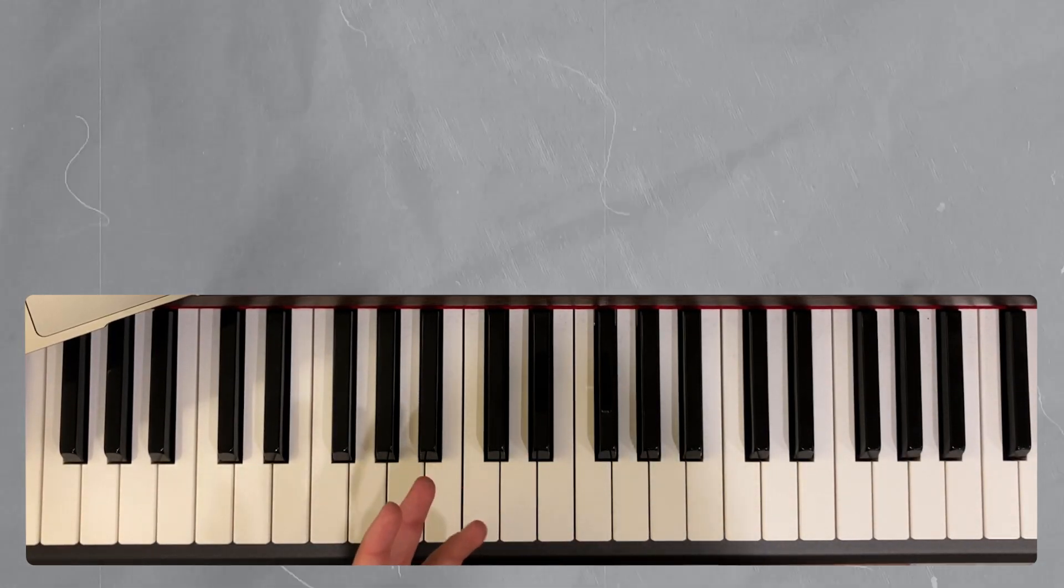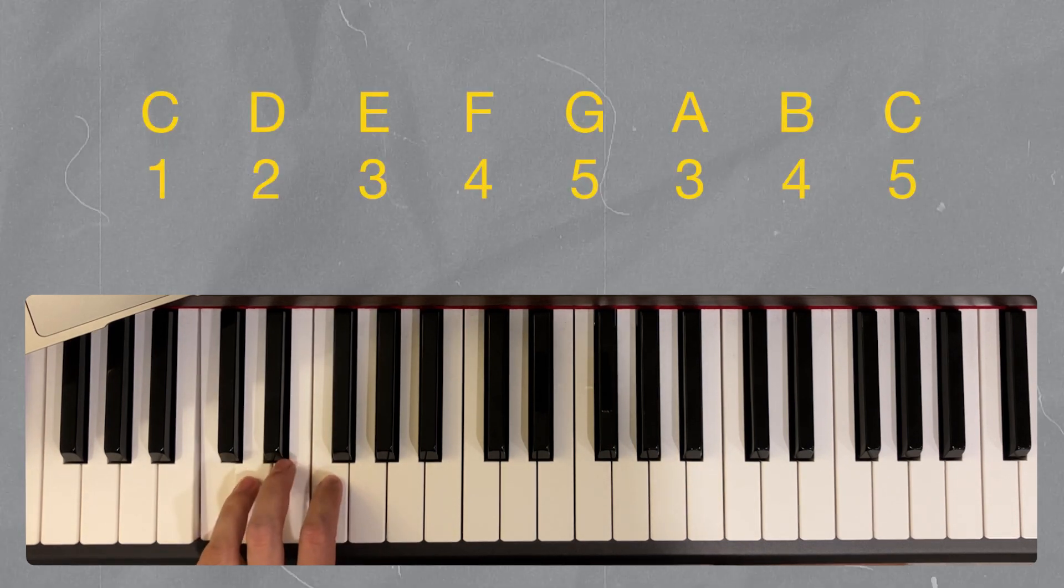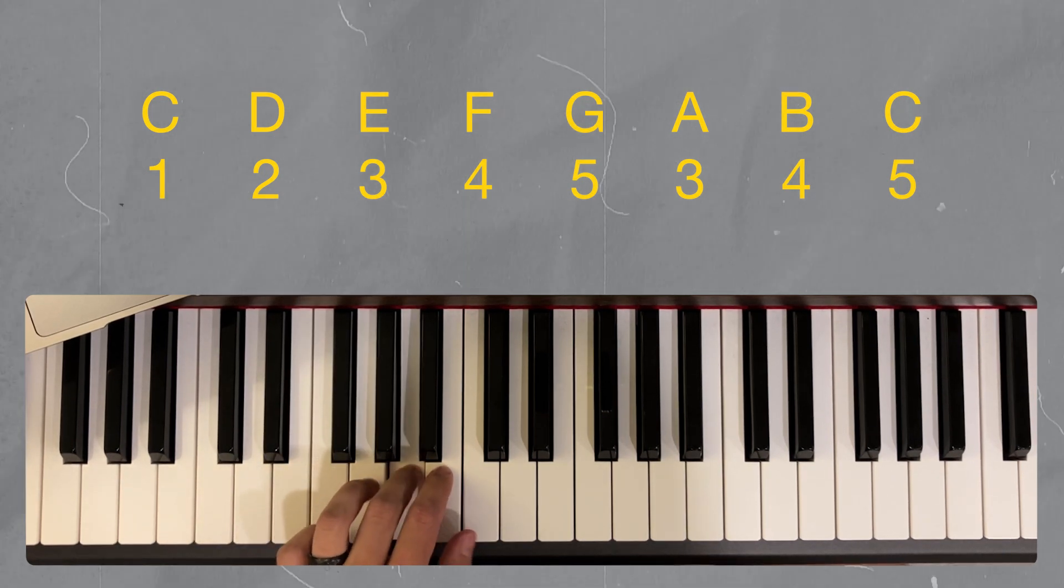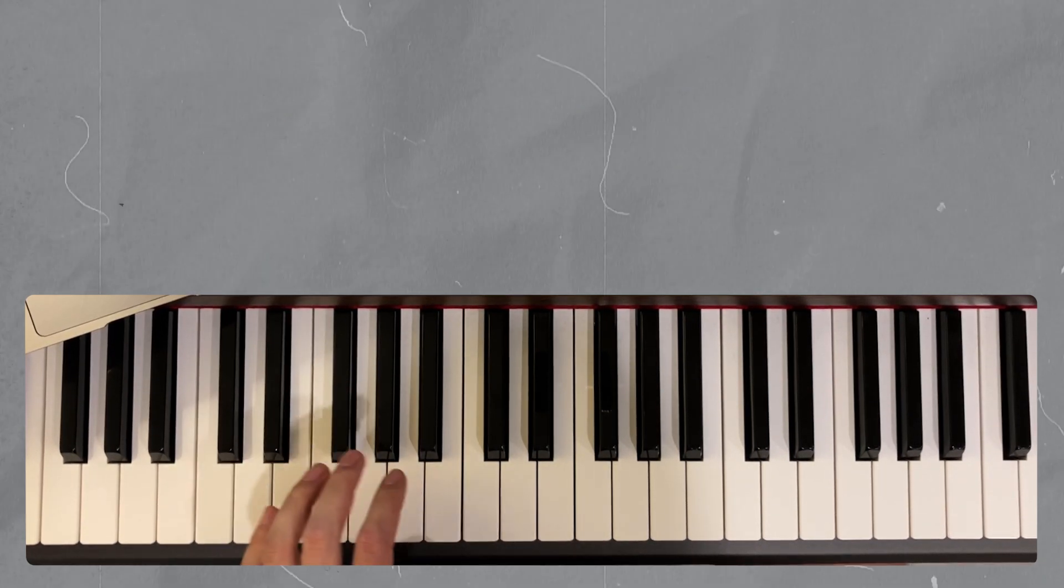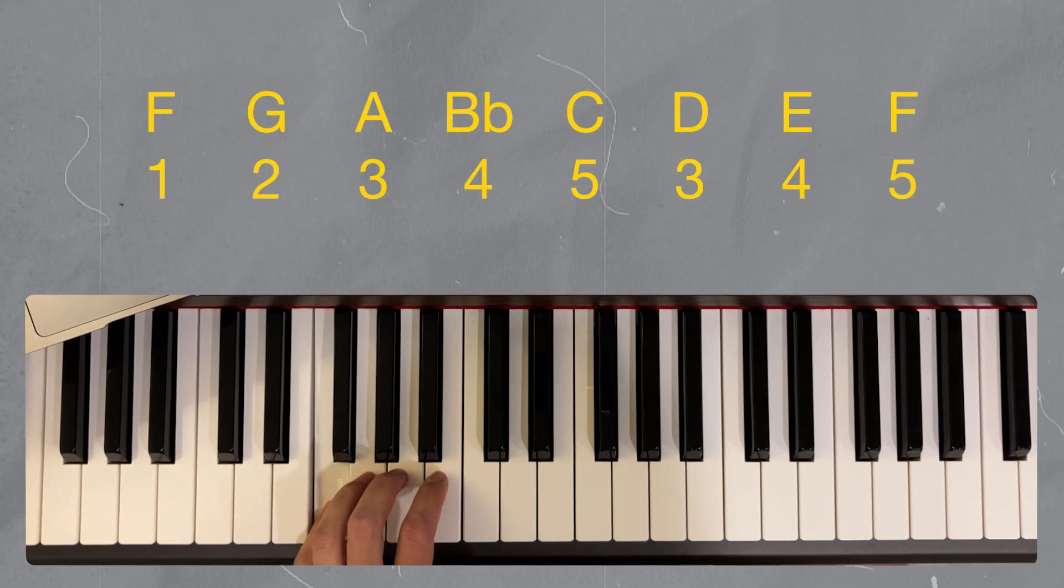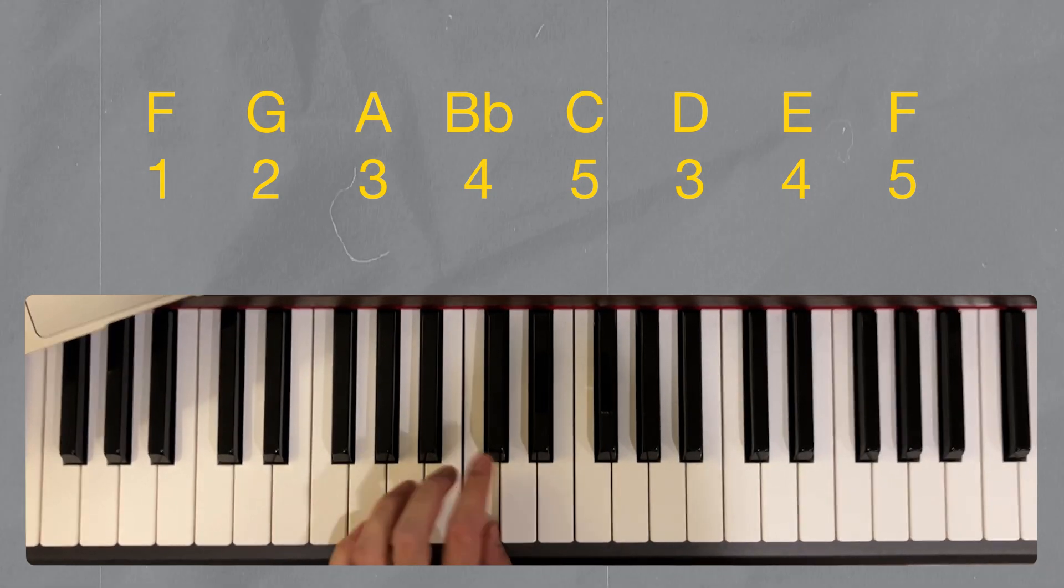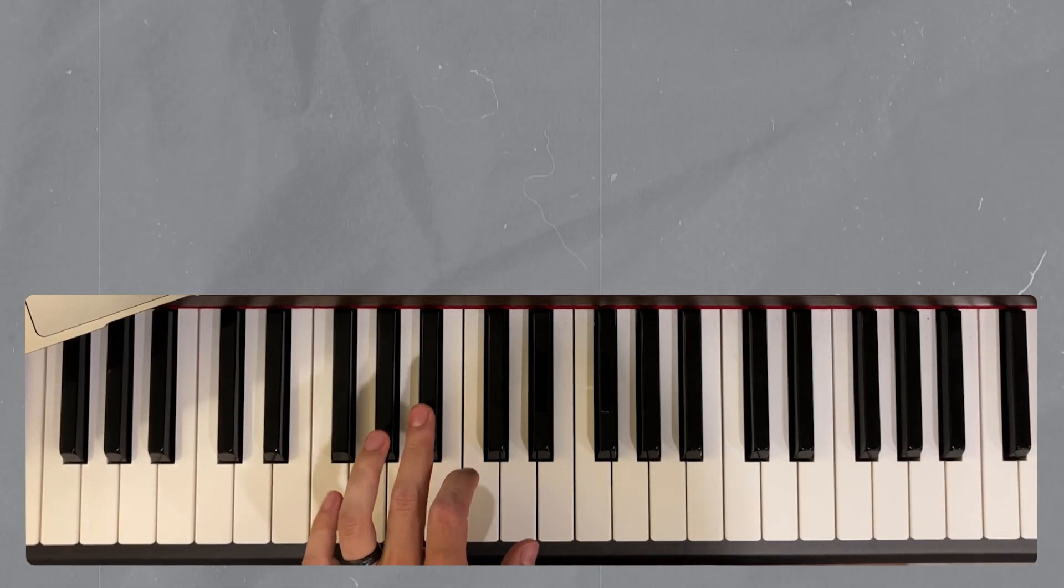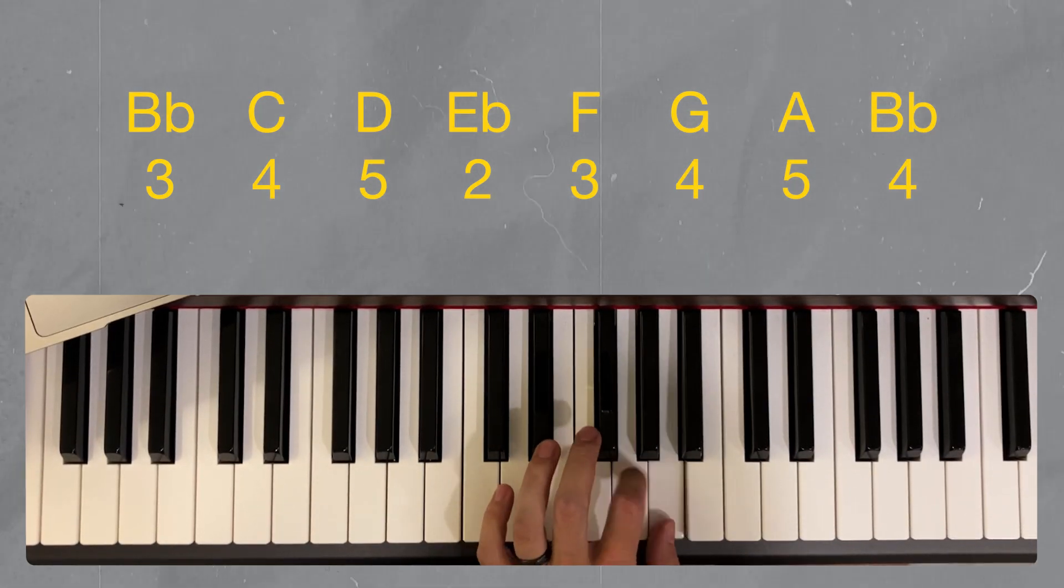Now I'll go through the same thing with my left hand. Starting with C and going down the flat side of the scale, I have 1, 2, 3, 4, 5, 3, 4, 5. For F, I have 1, 2, 3, 4, 5, 3, 4, 5. B flat I'm starting with 3, 3, 3, 4, 5, 2, 3, 4, 5.